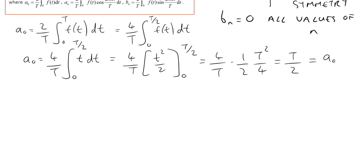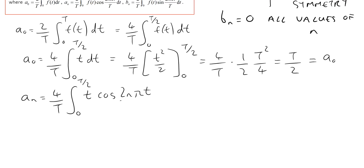So that's the value of a0. We now need to calculate the value of aN. Again we can make use of the fact that it's an even function. Instead of integrating between 0 and T, we can integrate between 0 and T over 2 and put an additional factor of 2 in. So we can write this as 4 over T, the integral between 0 and T over 2 of f of t, which is t, times cos(2nπt / T), dt. This is the integral we need to evaluate to find the value of aN.